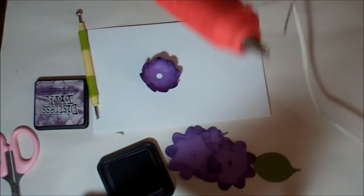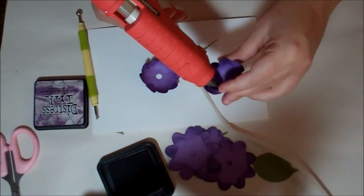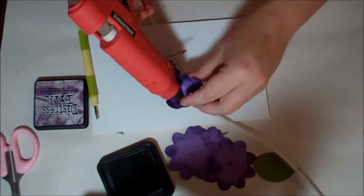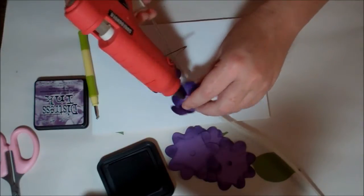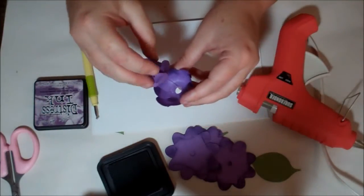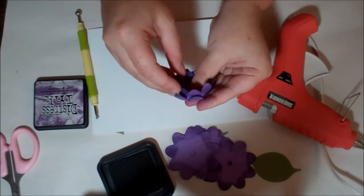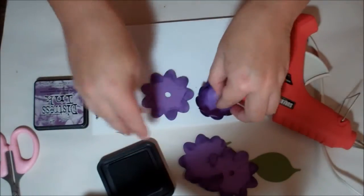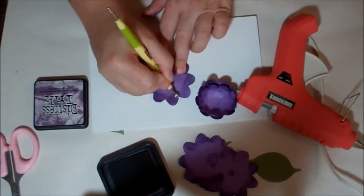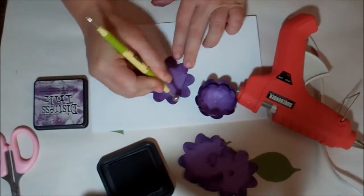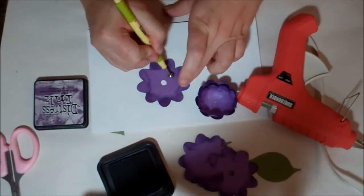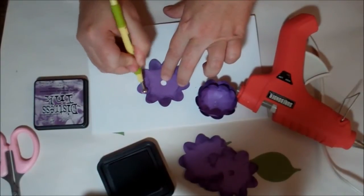Then what you're going to start doing is putting a little bit of glue right down the center like this, and then putting your next layer in. You just keep going until you have all the petals done.